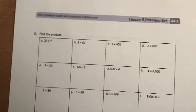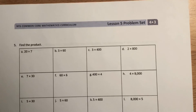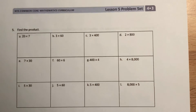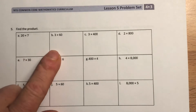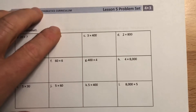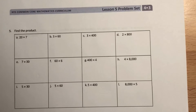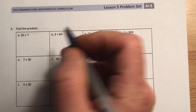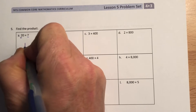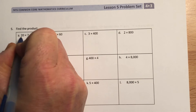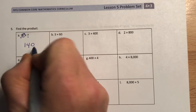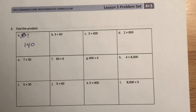Moving on to the next page — find the products. I'm going to do the first couple, and then I'd like you to pause this and do the rest and see how you do. So here: 20 times 7. Let's do 2 times 7 — that's 14. And it's not just 2 times 7, it's 20. So there's my zero, I put that on the end. That's 140.